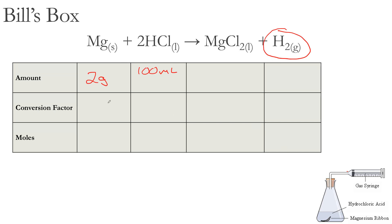This graphic organizer has a conversion factor row — that's what goes in the second row, showing how we're going to get to moles. The conversion factor for magnesium is simply its atomic weight, which we get from the periodic table. The atomic weight for magnesium is 24.31 grams per mole. For the hydrochloric acid we use molarity — moles per liter. The strength of that hydrochloric acid is 1.0 molar, a pretty weak acid, so we put 1.0 M, which is moles over liters.